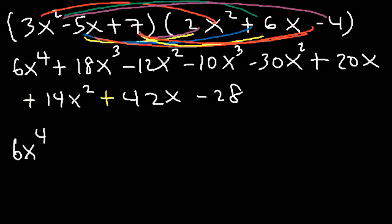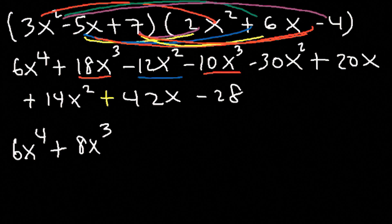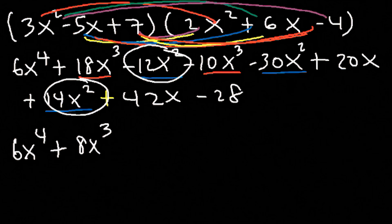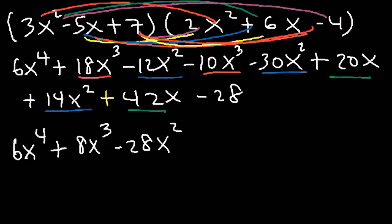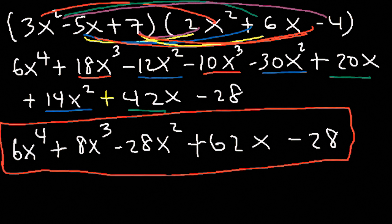We have 6x to the 4th. Combining the x cubed terms: 18 minus 10 is positive 8. For the x squared terms: negative 12 plus 14 is positive 2, and 2 minus 30 is negative 28. For the x terms: 42 plus 20 is 62. And the last term is negative 28. So this is it: 6x to the 4th plus 8x cubed minus 28x squared plus 62x minus 28. Now you know how to multiply a trinomial with another trinomial.